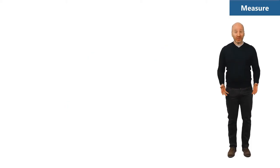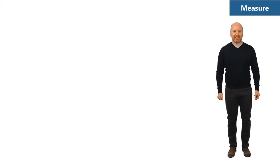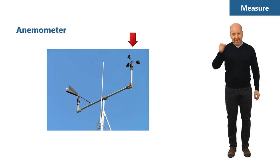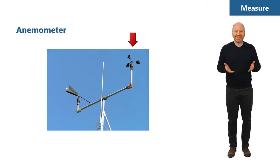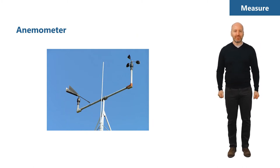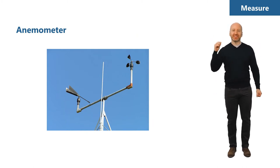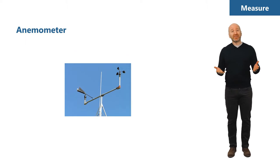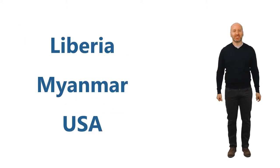Let's take a closer look at the instruments that sit on a metmast. This is called an anemometer — a very simple device. It has three cups attached to a vertical shaft, and it spins whenever the wind blows because at least one cup is always facing into the wind. The speed of each rotation enables the device to measure the horizontal wind speed in meters per second.